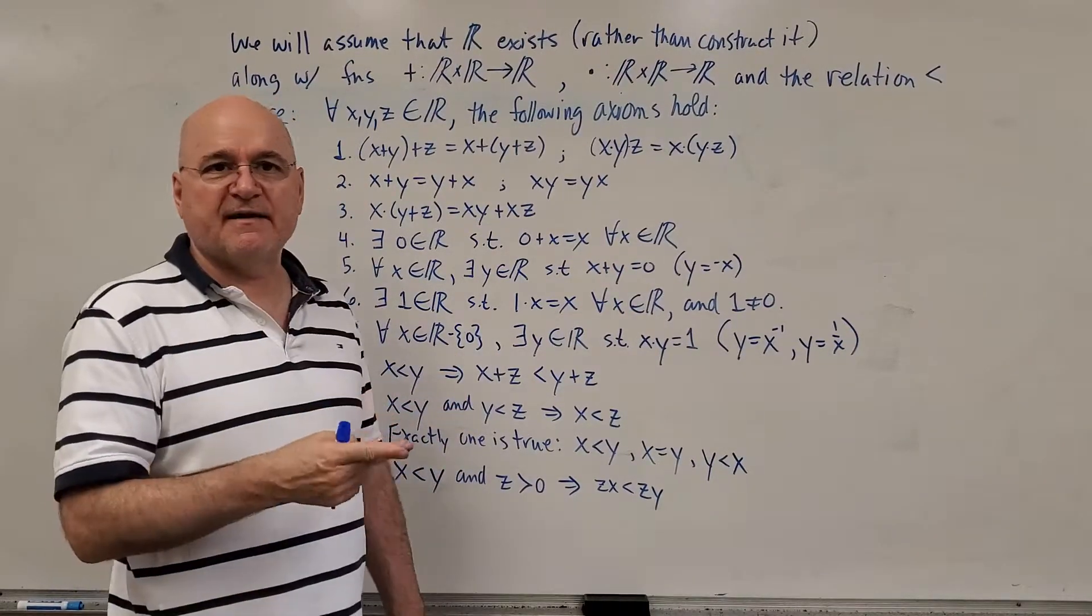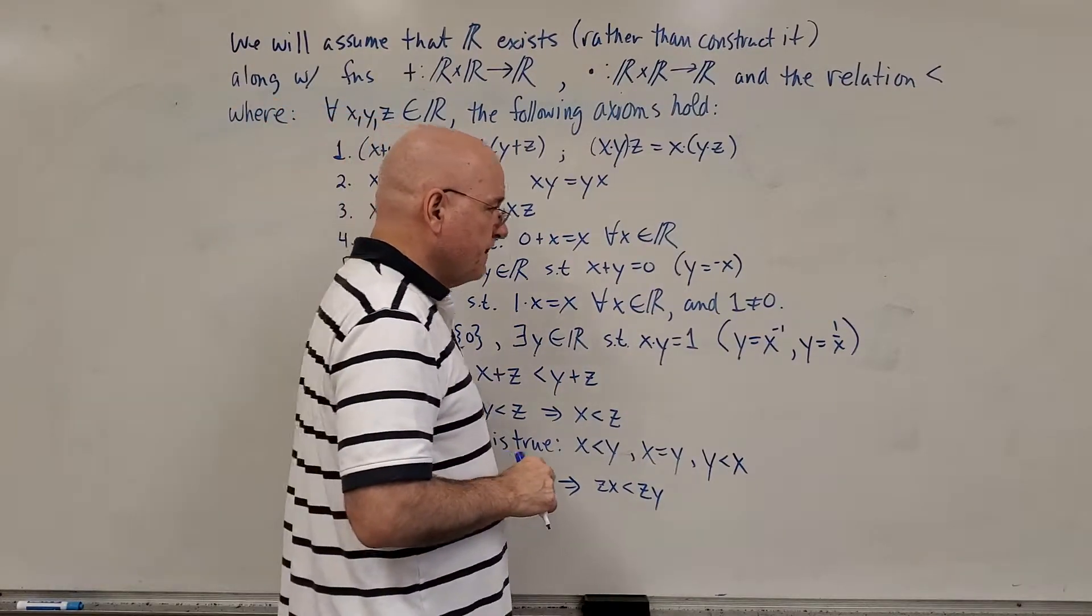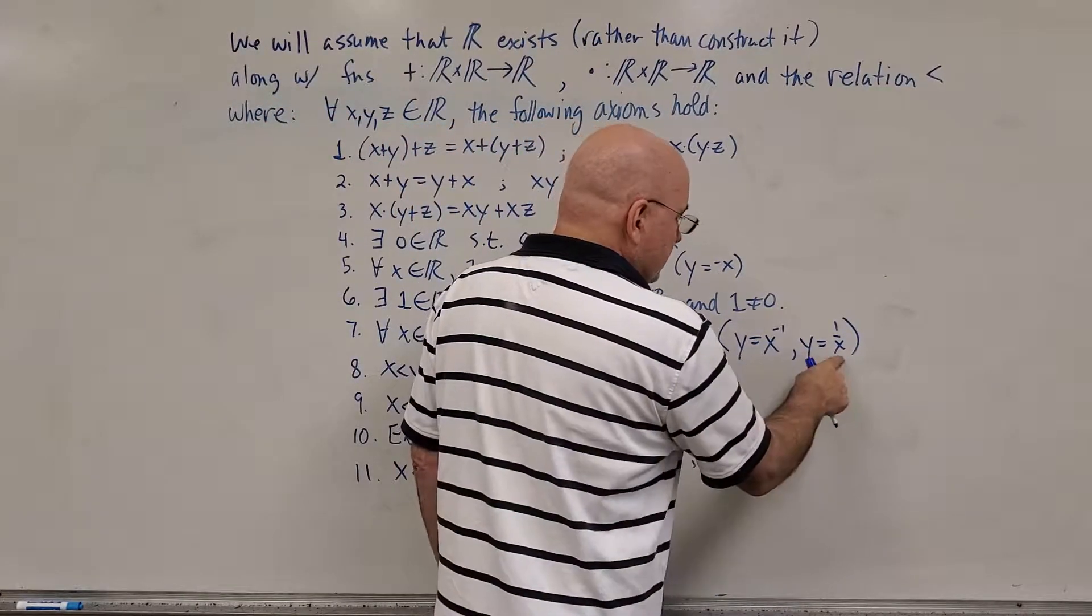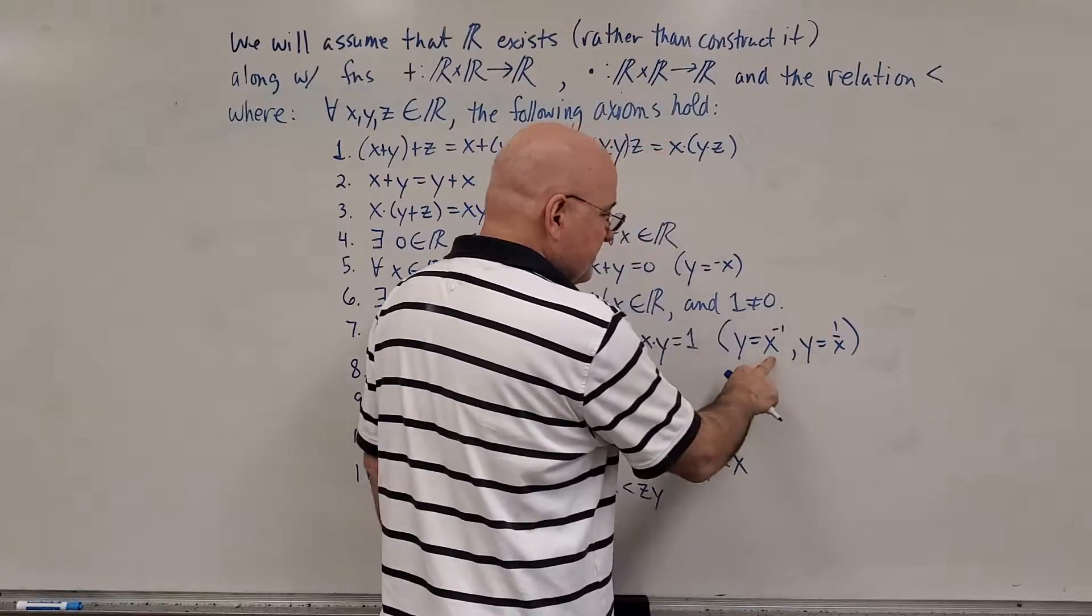You can think of it as the reciprocal of that number. Zero is the only number that doesn't have a reciprocal. And we write it as y equals one over x, which using exponents, we could write it like this.